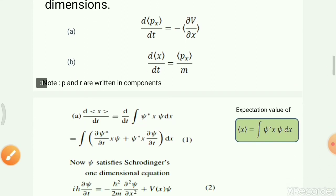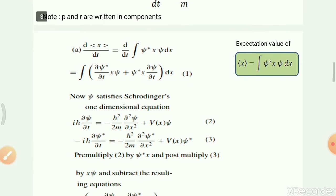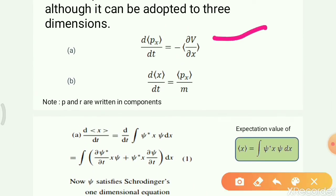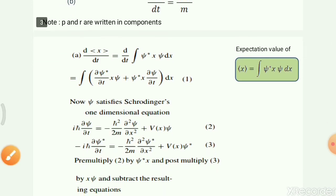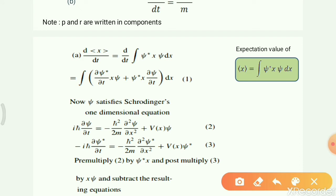So note that p and r are written as components. Now we are going to verify these two statements — to check whether they hold in quantum mechanics. And they will hold with the help of expectation values. The first formula we need to prove is d<x>/dt = <p>/m. Let us try to prove this first.